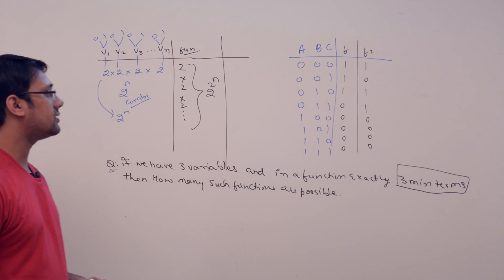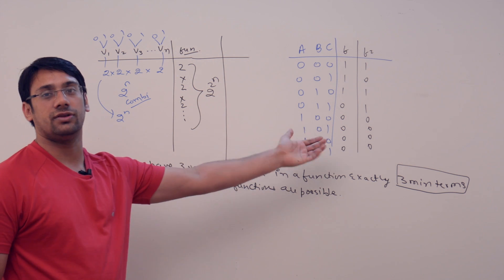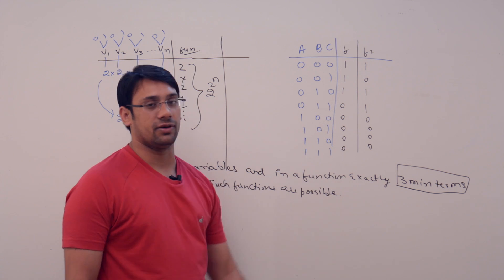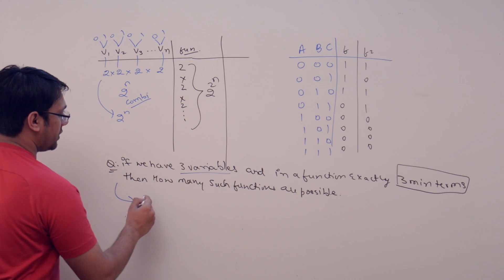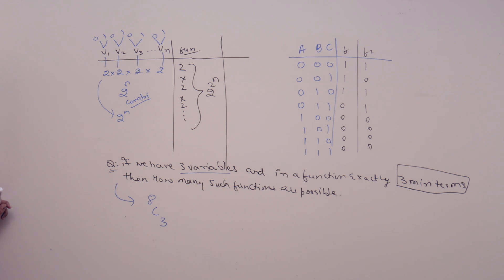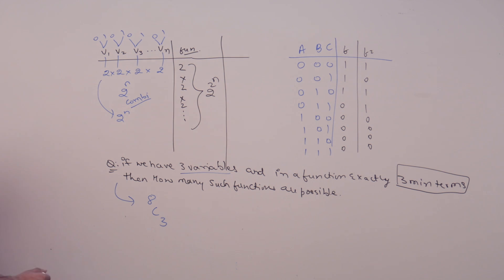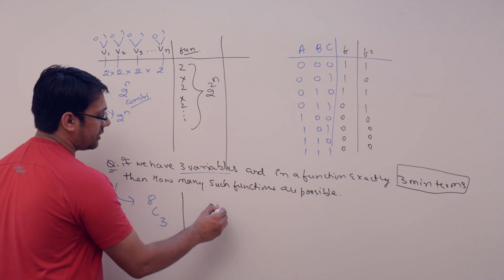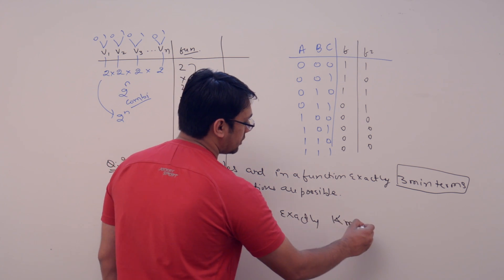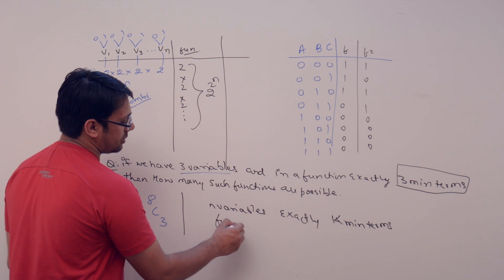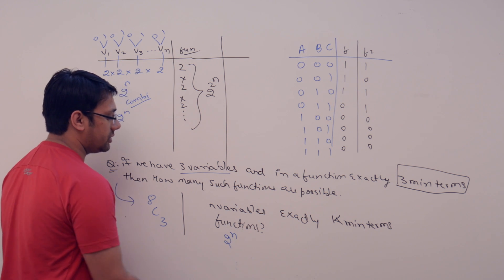This question is clearly about combinations. If we have eight locations and want to make exactly three of them 1, then 8C3 different combinations are possible. Generalizing: if we have n variables and exactly k min terms, then the number of such functions is 2 raised to power n, choose k.